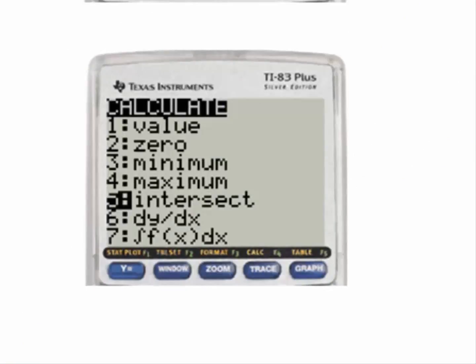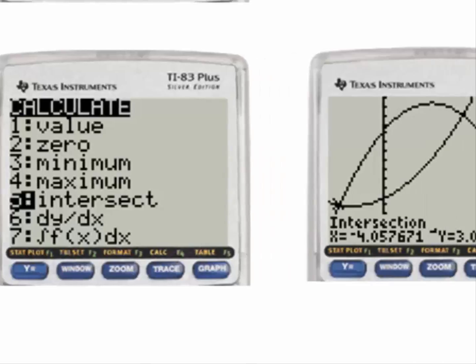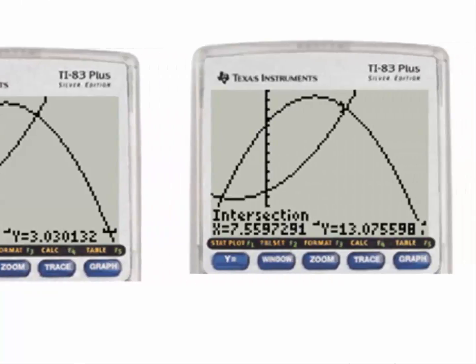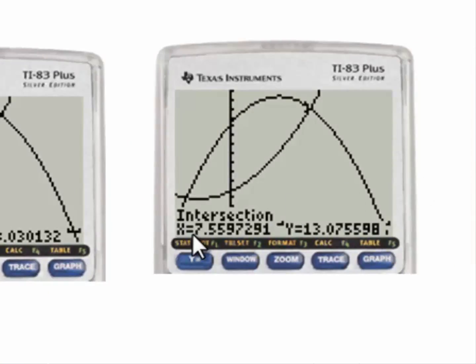We have a point of intersection here and a point of intersection here. Hitting second and Trace, which is Calculate, and selecting number 5 for intersect, we see that the first point of intersection is close to negative 4.1, and the second point of intersection is when x is about 7.6.